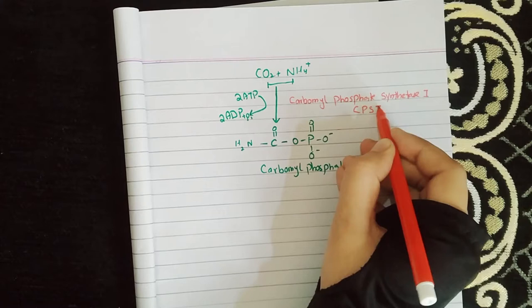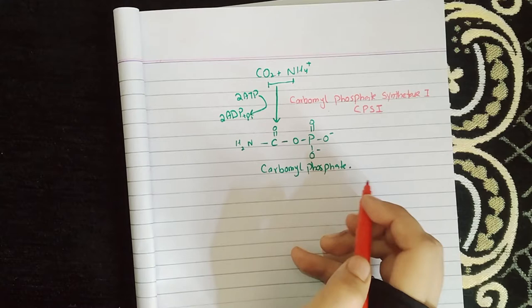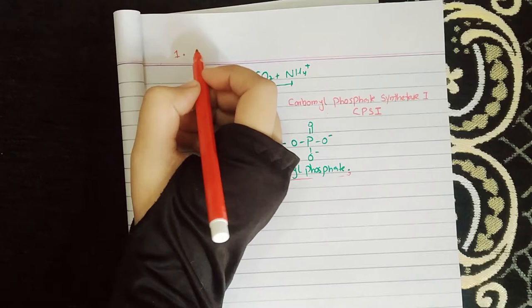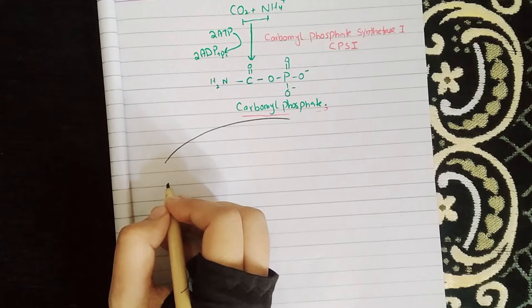The enzyme is called Carbamoyl Phosphate Synthetase-1. With that, the first step — the formation of Carbamoyl Phosphate — is completed.